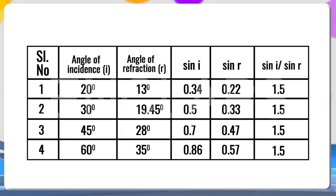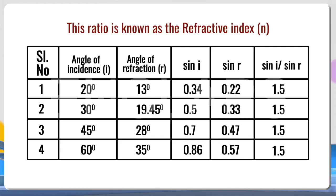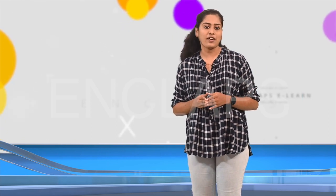From the previous glass slab experiments, we find that when the light ray passes through different media, the angle of refraction increases with the angle of incidence. Observing the sin i and sin r values and their ratio, we can clearly see that the ratio sin i divided by sin r is a constant. This ratio is known as the refractive index, indicated by the letter n. The facts we have understood about refraction can be stated as the following laws, called the laws of refraction.